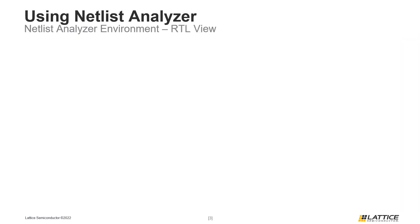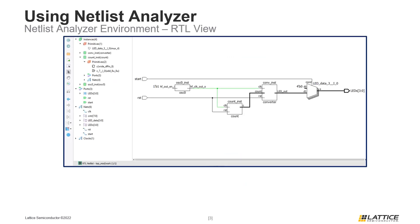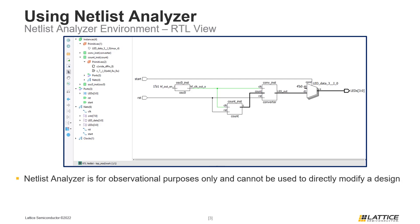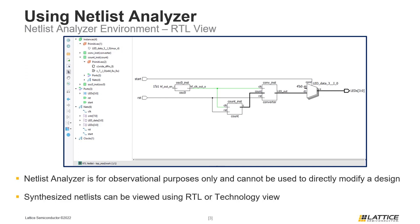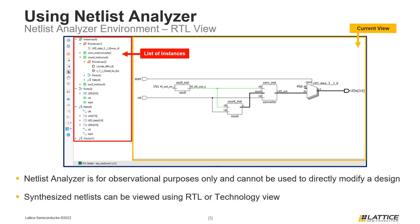Once Netlist Analyzer has opened, users should see something similar to the figure on the slide. One important thing to remember is that Netlist Analyzer is used for debugging purposes and cannot be used to directly modify a design. Netlist Analyzer consists of two views; its default view is called RTL. The main portion of the window is the current Netlist Analyzer view area, which displays the synthesized design's netlist in terms of logic gates and components. It also supports multi-level hierarchy. On the left side of the window is the list of instances, where synthesized components are listed. Selecting an instance highlights its corresponding component in the main view.